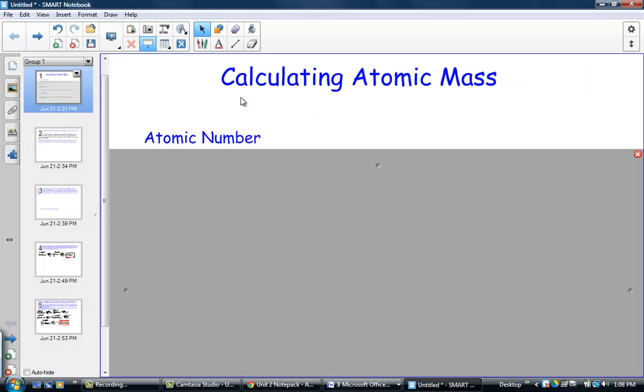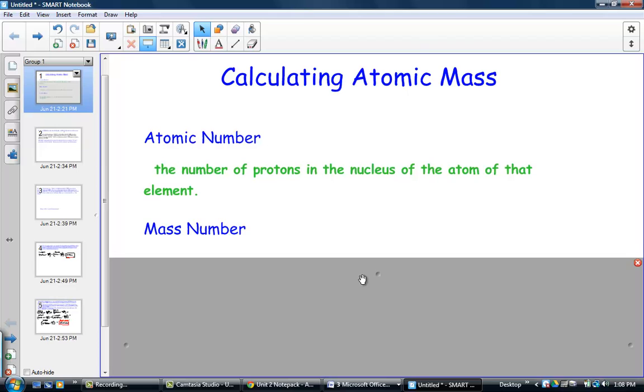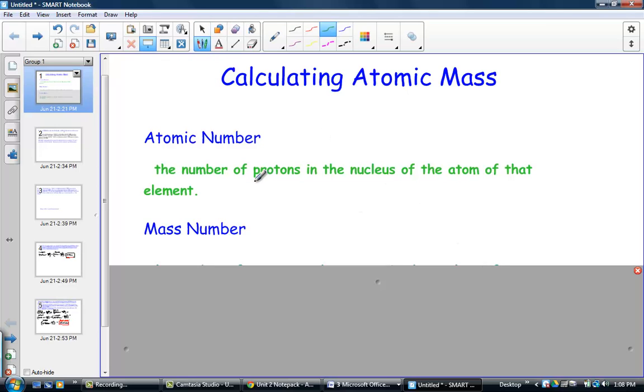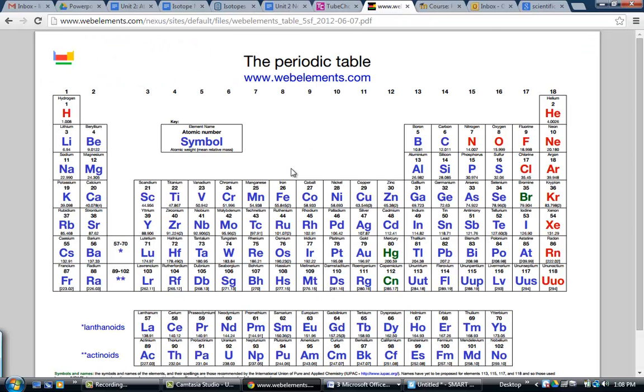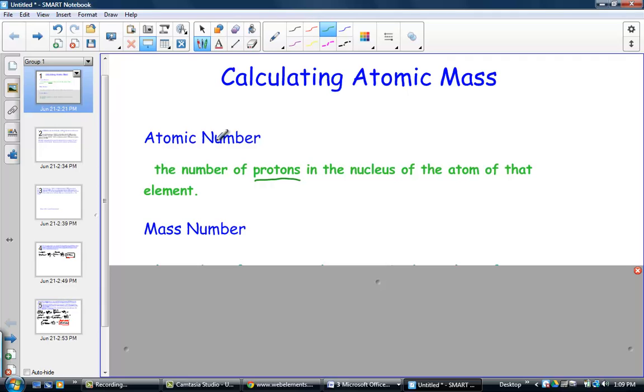The first set of notes is going to go through two review vocabulary terms, and then one brand new one. The first two are review terms called atomic number and mass number. So let's start slow and put into the notes our definition. The atomic number: the number of protons in the nucleus of an atom for that particular element. Remind yourself, where do we find those on the periodic table? They are the whole numbers that just increase by one unit from left to right. Hydrogen one, helium two, lithium three. It gives the atom its identity.